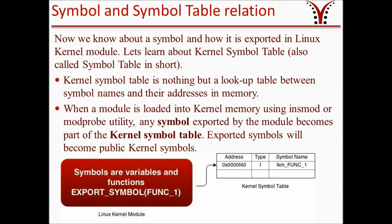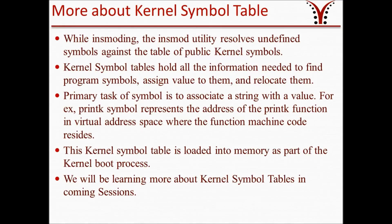Whenever you insmod a Kernel Module, whatever functions or variables are exported using EXPORT_SYMBOL will become part of this table. This table is used as a lookup table between symbol names and their addresses in memory. The insmod utility resolves undefined symbols against the table of public Kernel Symbols. The Kernel Symbol Table holds all information needed to find program symbols, assign values to them, and relocate them. The primary task of a symbol is to associate a string with a value — for example, the printk symbol represents the address of the printk function in virtual address space where its machine code resides.